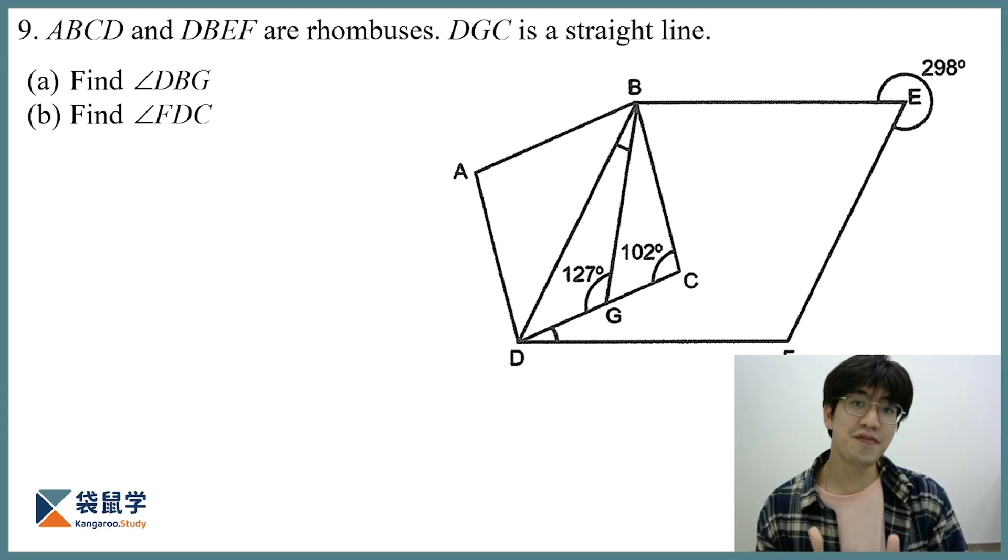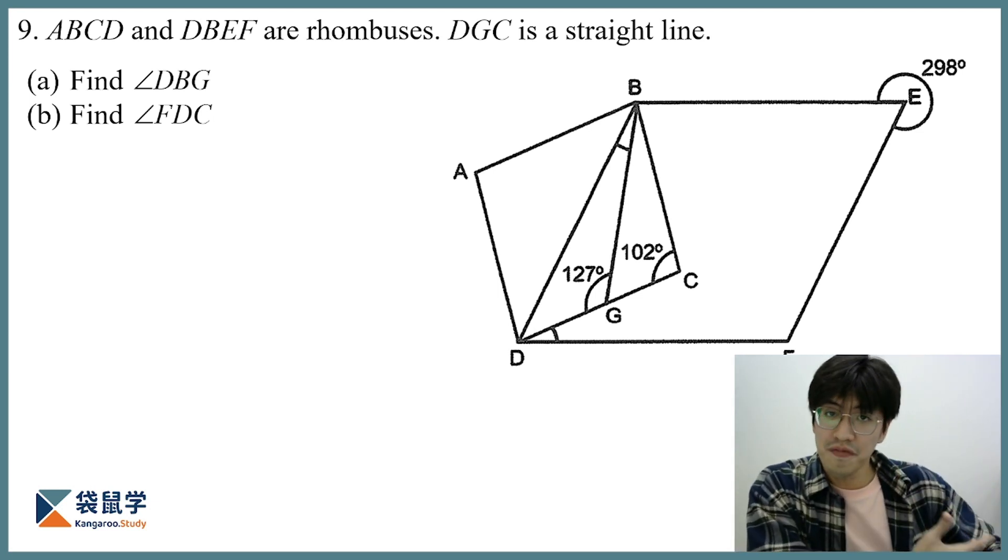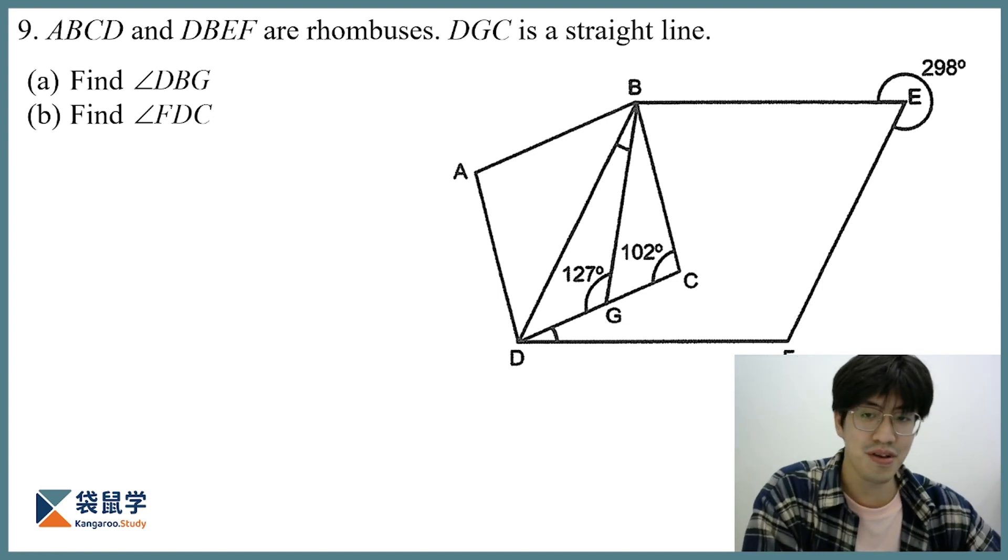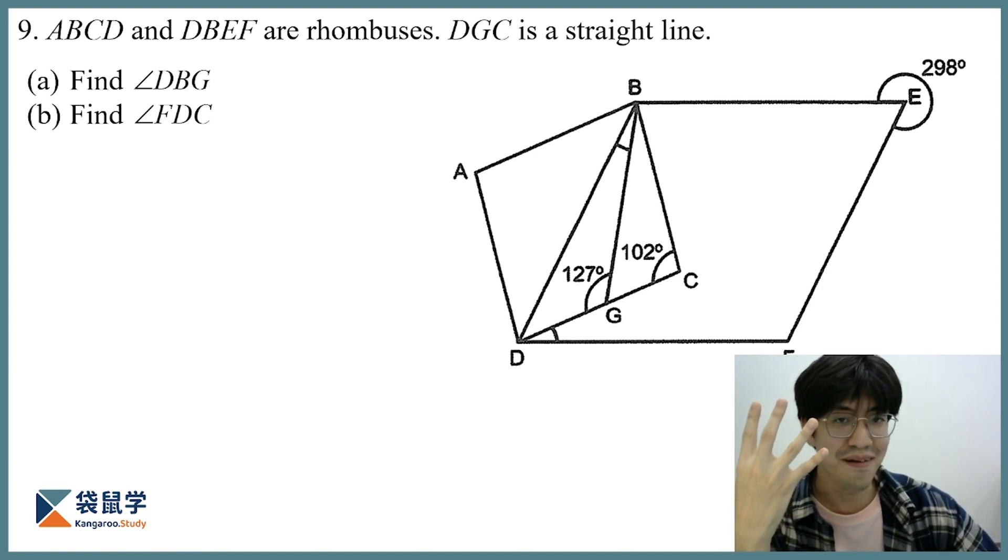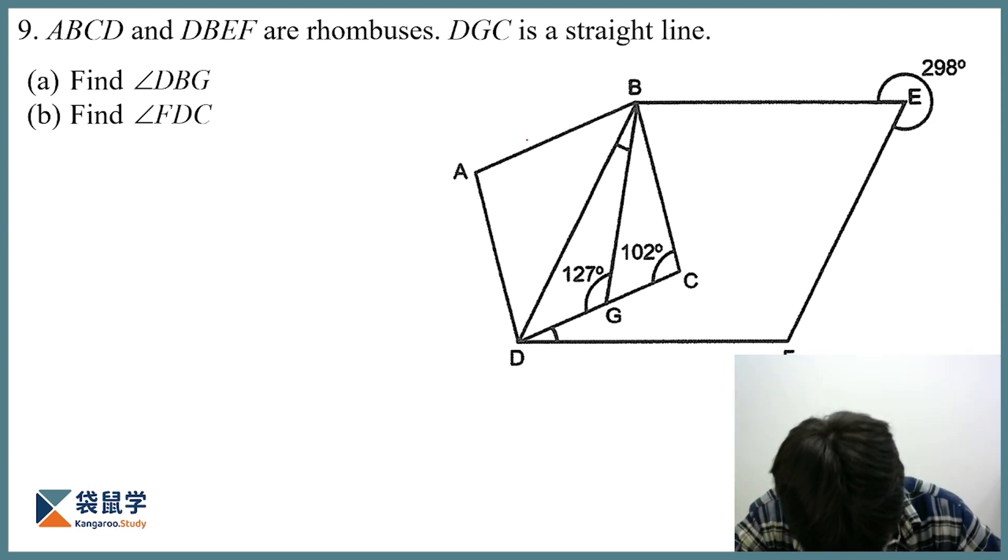Well, not only does it follow the properties of a parallelogram, on top of the properties of a parallelogram, we know all four sides of a rhombus are equal. So let me label it out. Equal, equal, equal, equal.